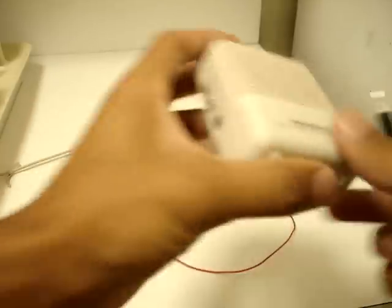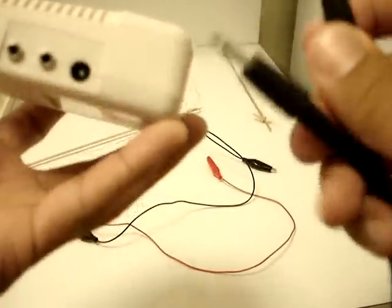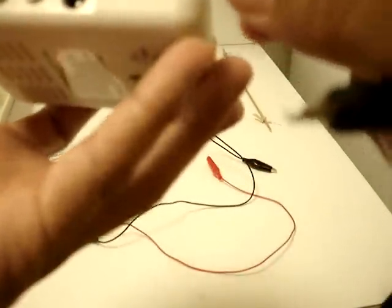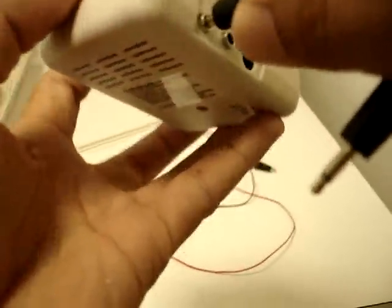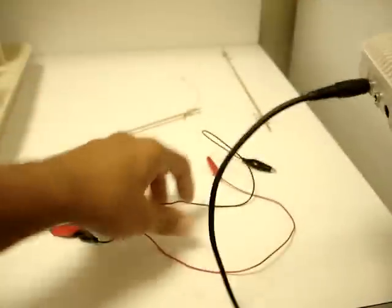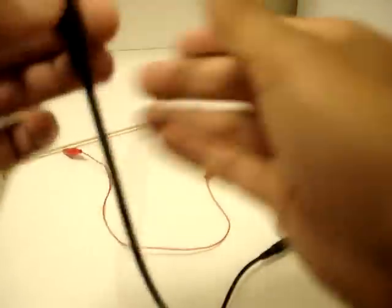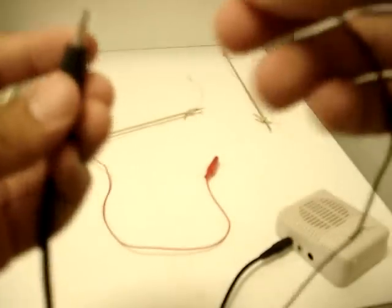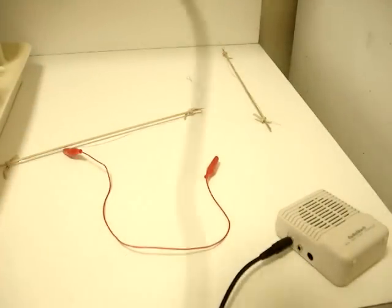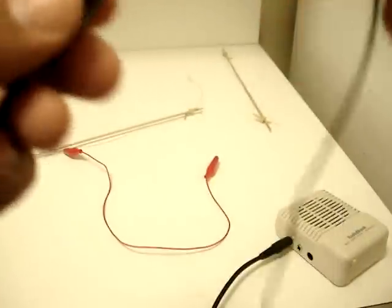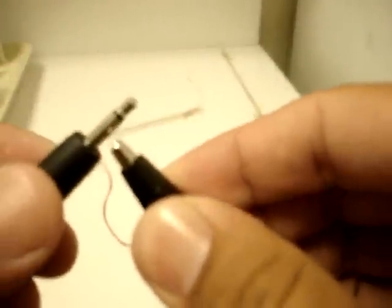Now to set this up, you hook up the audio cable into the input, that's one. Then you take one of the mini alligator clips and clip one end.